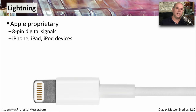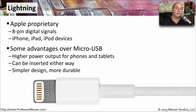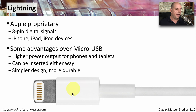Apple decided not to use the Micro-USB standard for their devices. Instead, they use a Lightning connector, which is proprietary to Apple. It uses eight pins on the end of the connector to send digital signals to iPhones, iPads, and iPod devices. These Lightning connectors provided Apple with some advantages over Micro-USB — specifically, a higher power output, the ability to be inserted either way for convenience, a simpler design, and greater durability than the Micro-USB interface.